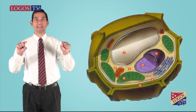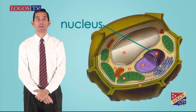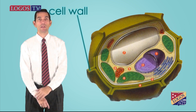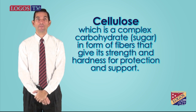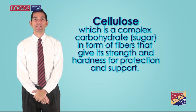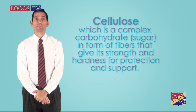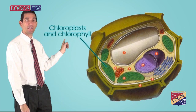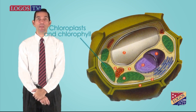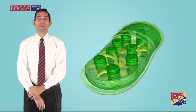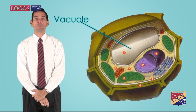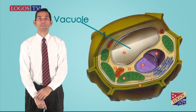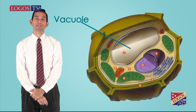Plant cells are a little bit smaller than animal cells and normally rectangular. All plant cells have a nucleus where DNA is stored. They have a cell wall made of cellulose, which is a complex carbohydrate in the form of fibers that give strength and hardness for protection and support. Plant cells have chloroplasts, an organelle containing chlorophyll, a green pigment that absorbs light when carbon dioxide and water combine to produce glucose. Plant cells also contain one large vacuole where water can be stored. Plant cells have no motility.